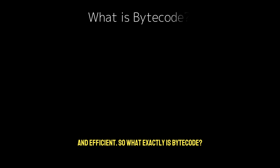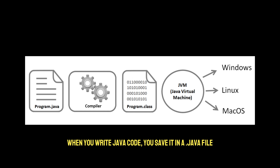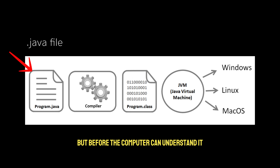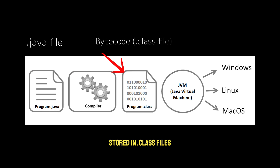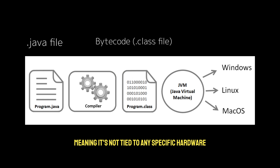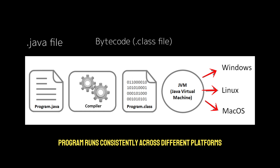So what exactly is bytecode? Think of bytecode as a middleman. When you write Java code, you save it in a .java file. But before the computer can understand it, the Java compiler converts it into an intermediate format called bytecode, stored in .class files. This bytecode is platform-independent, meaning it's not tied to any specific hardware or operating system. Bytecode can be interpreted by any Java Virtual Machine, ensuring that your Java program runs consistently across different platforms.